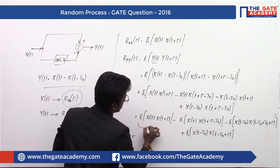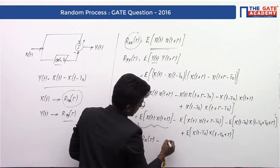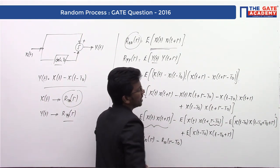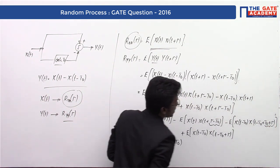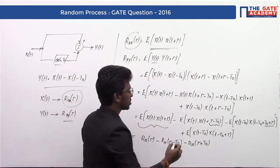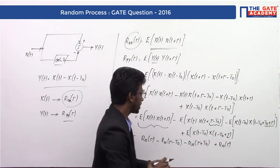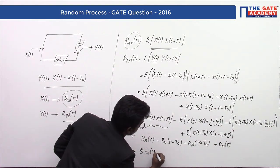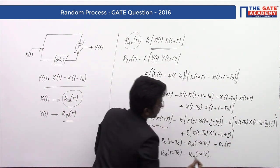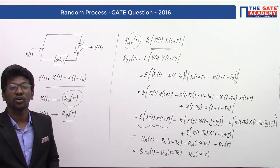So the first term gives Rx(τ). For the second term, the τ value is τ - T₀, giving Rx(τ - T₀). For the third term, similarly, it is Rx(τ + T₀). For the fourth term, τ is just τ, giving Rx(τ). So the output Ryy(τ) is: 2Rx(τ) - Rx(τ - T₀) - Rx(τ + T₀), since the first and fourth terms both give Rx(τ).